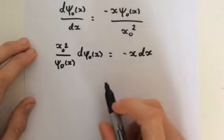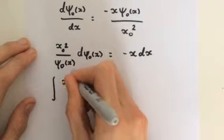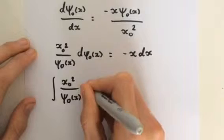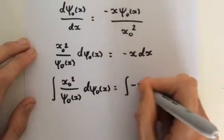Now we integrate. So the integral of x_0 squared divided by psi_0(x) with respect to d psi_0(x) is equal to the integral of negative x dx.